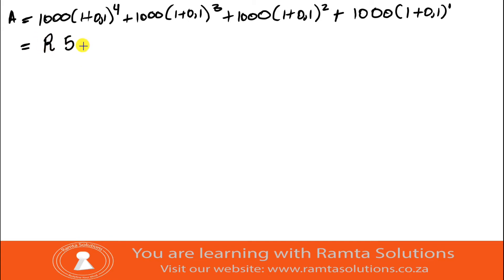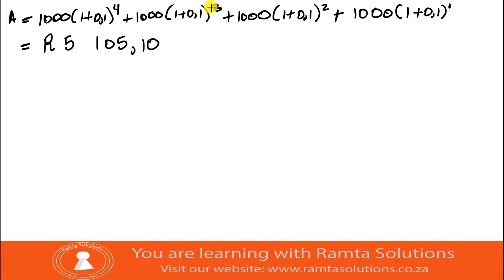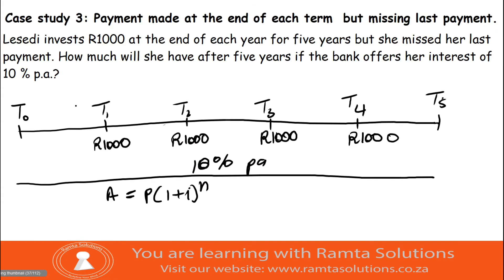The answer is R5,105.10 — five thousand, one hundred and five rands and ten cents. This is the amount when she misses the last payment; she only missed one payment.